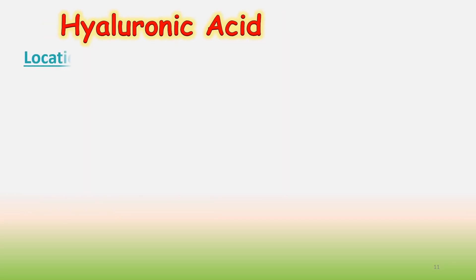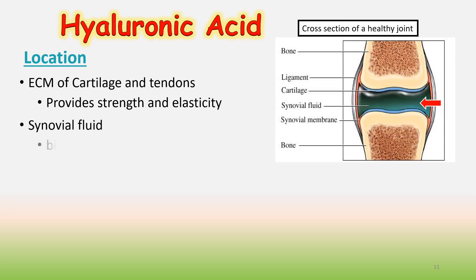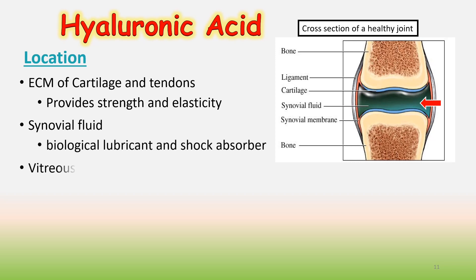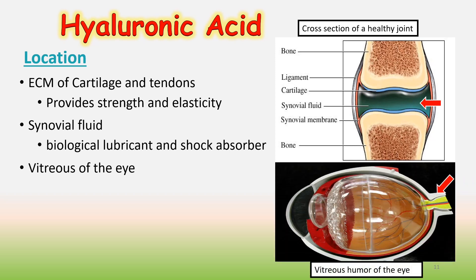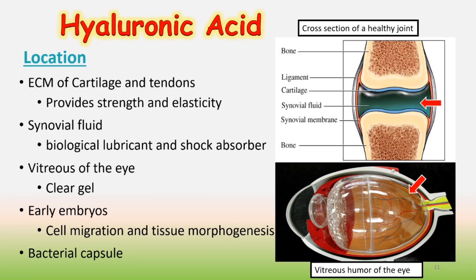What is the location of hyaluronic acid? It is located in the extracellular matrix of cartilage and tendon, where it provides strength and elasticity. It is also present in synovial fluid, where it acts as a biological lubricant and shock absorber. It is also present in the vitreous of the eye as a clear gel. Hyaluronic acid is also present in early embryos during cell migration and tissue morphogenesis, and in bacterial capsules.